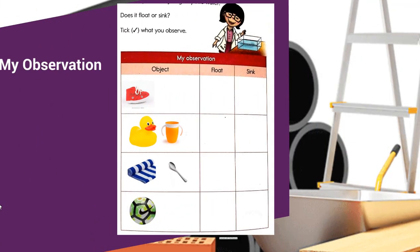After watching this video, we will solve the observation form. The first object is shoe — shoe sinks. Toy duck and cup float. Towel and spoon sink. Ball floats.